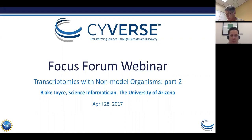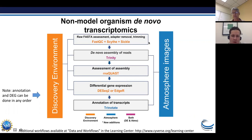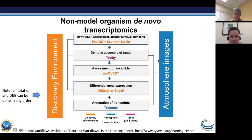We started off last month with the pipeline to do Non-Model Organisms De Novo Transcriptomics. We assessed raw FASTQ reads from the sequencing, trimmed and filtered those, then moved into doing the assembly using Trinity on an Atmosphere cloud image. We got as far as assessing that assembly with Trinotate and looking at some of its outputs.